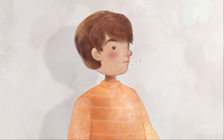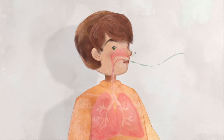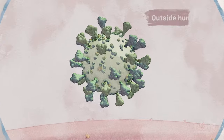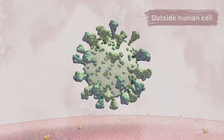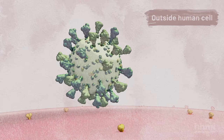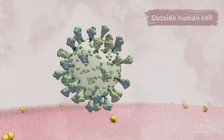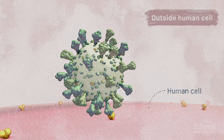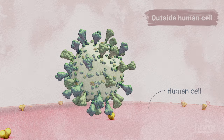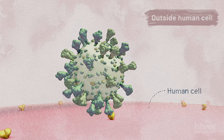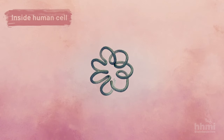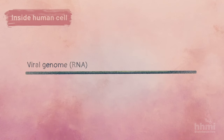Coronaviruses enter the body mainly through the mouth or nose. The virus then has to get inside a human cell. The protein spikes in the virus's envelope attach to specific proteins on the surface of a cell. This causes the virus's membrane to fuse with the cell's membrane, releasing the virus's RNA genome into the cell.